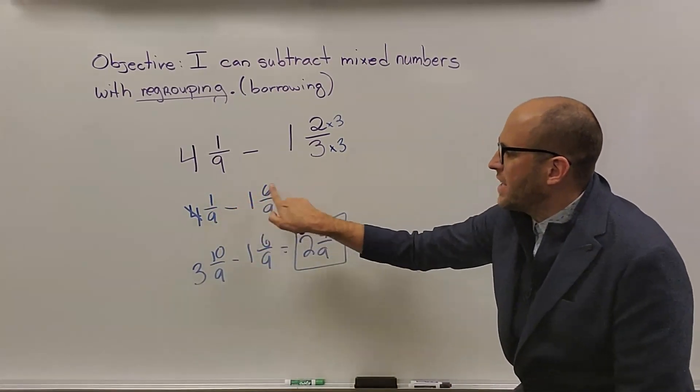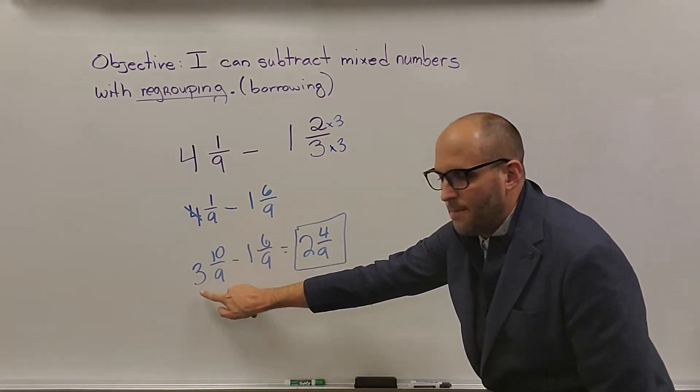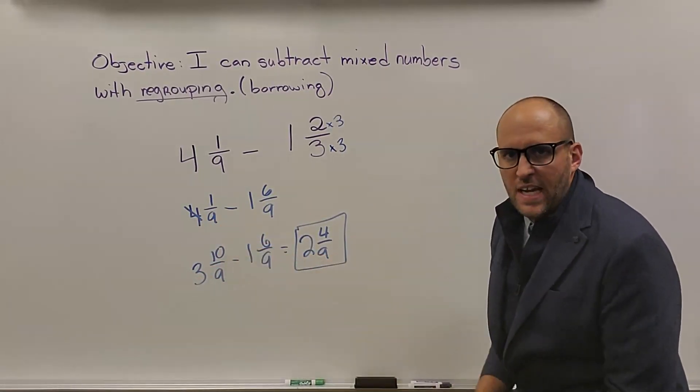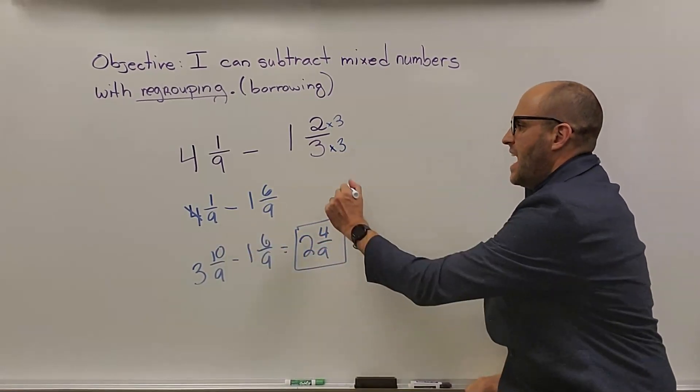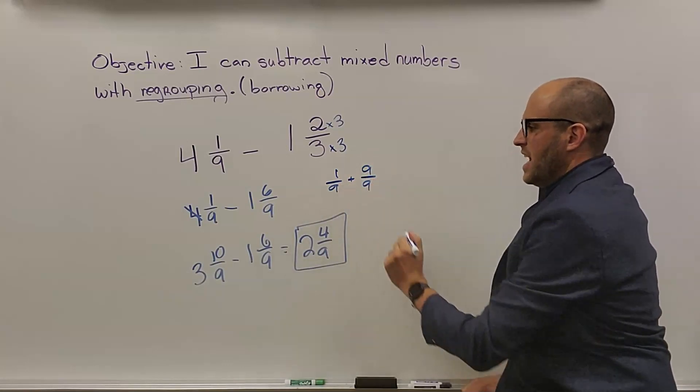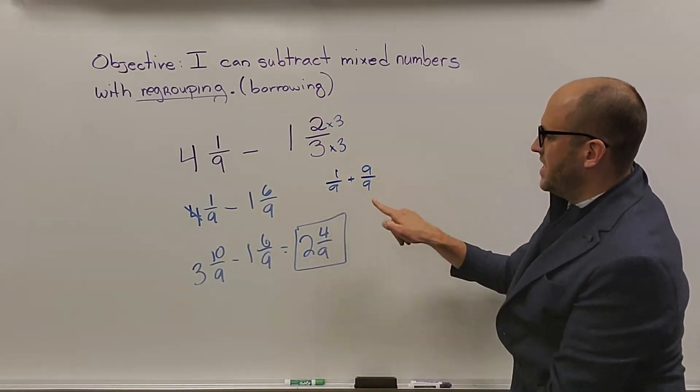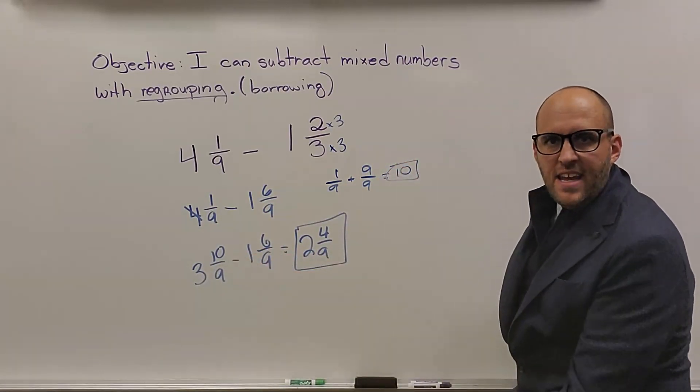I can't subtract 1 minus 6. 1 is smaller than 6, so I have to borrow. I take my 4, make it a 3. Now I have to change my numerator. See, now we're in a base 9 system, which means when we borrow, we're actually adding 9 over 9. 9 plus 1 is 10, which is why I have 10 here.